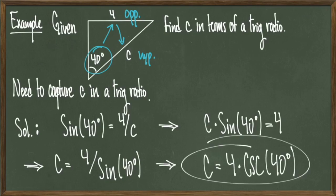But we can use that last ratio and realize that c has to then be equal to 4 times cosecant of 40 degrees. And this is because cosecant of theta is equal to 1 over sine of theta for any angle theta.